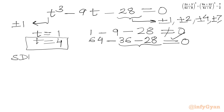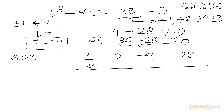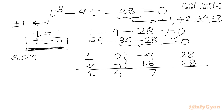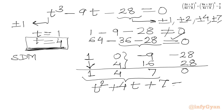Using synthetic division with root T = 4 and coefficients 1, 0, −9, −28: bring down 1; 4×1 = 4, add to get 4; 4×4 = 16, add to −9 to get 7; 4×7 = 28, add to −28 to get 0. This gives the quadratic factor T² + 4T + 7 = 0.